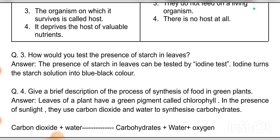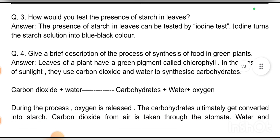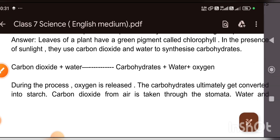Question four: Give a brief description of the process of synthesis of food in green plants. Answer: Leaves of a plant have a green pigment called chlorophyll. In the presence of sunlight, they use carbon dioxide and water to synthesize carbohydrates.